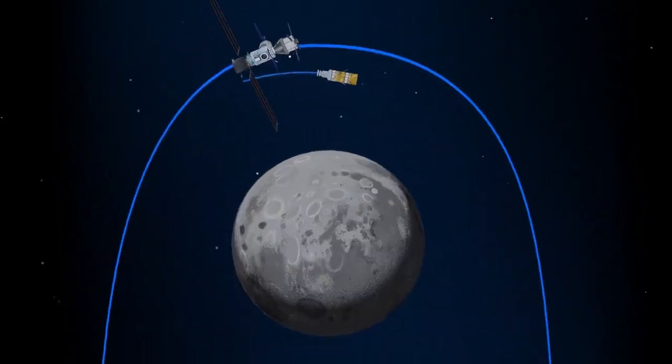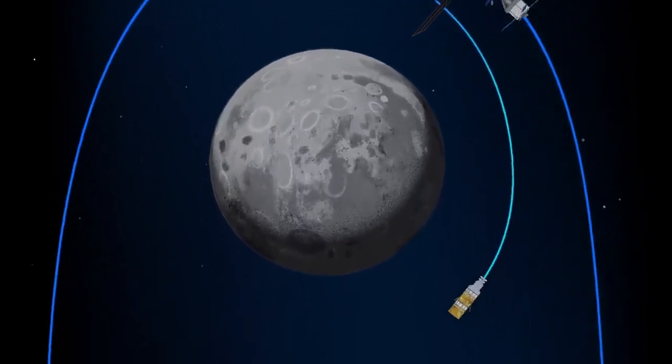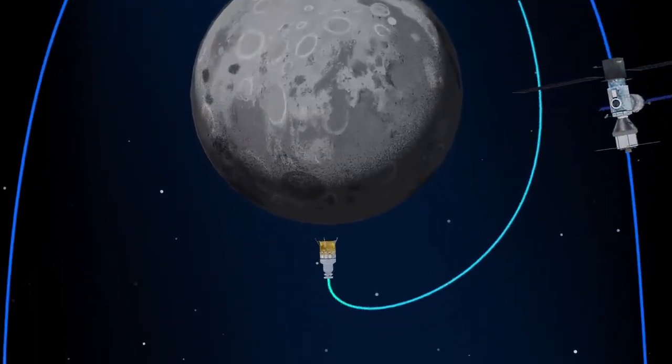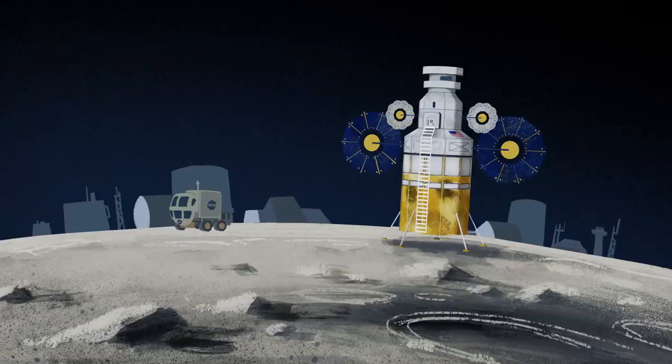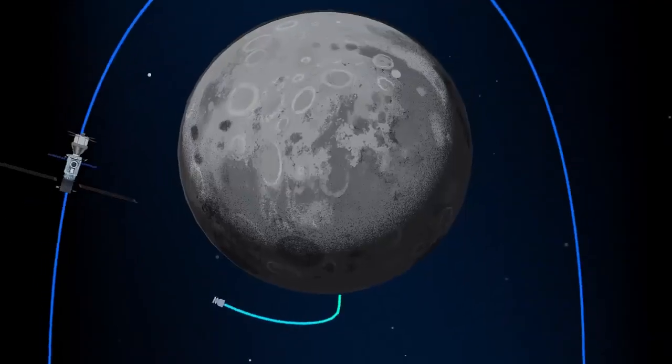The lunar lander system itself is built for three unique steps: descending from the halo orbit of Gateway down to a low lunar orbit, descending from low lunar orbit to the surface, and once the lunar mission is complete, launching from the surface of the Moon and ascending all the way back to the orbiting Gateway.